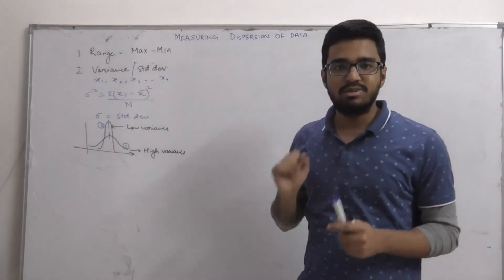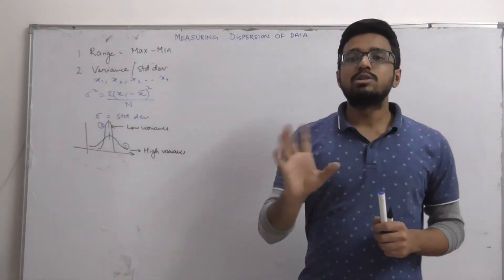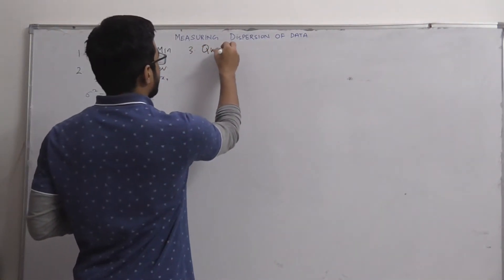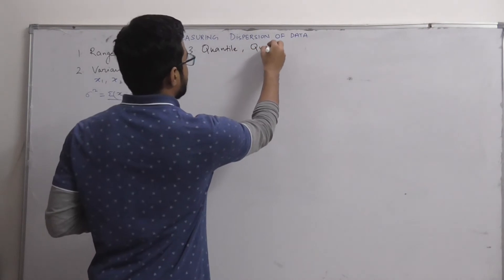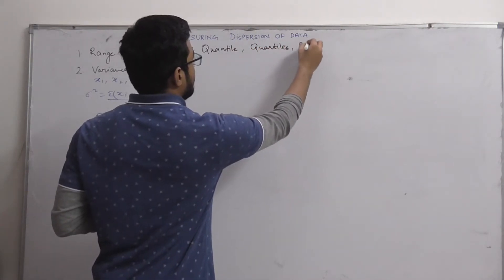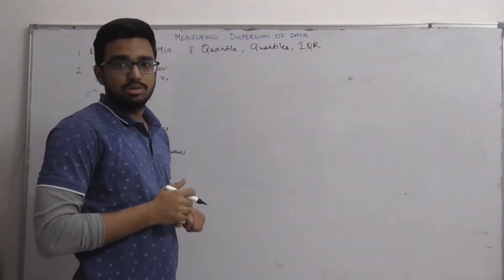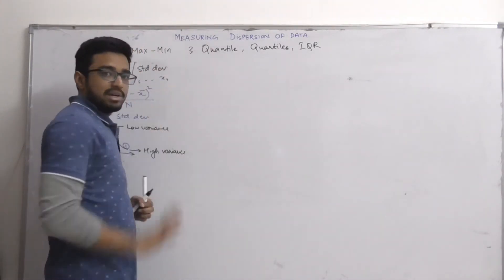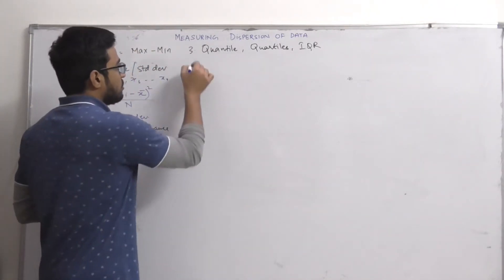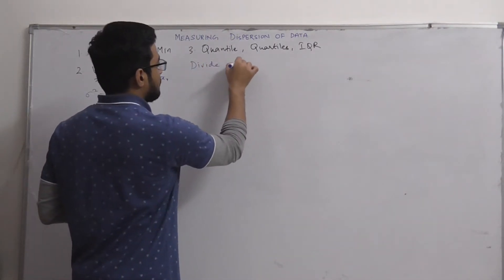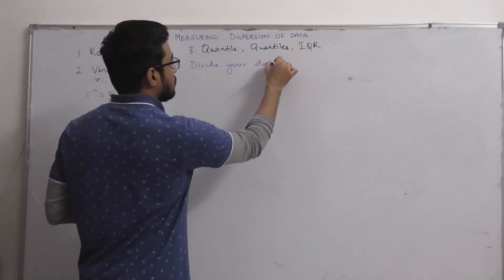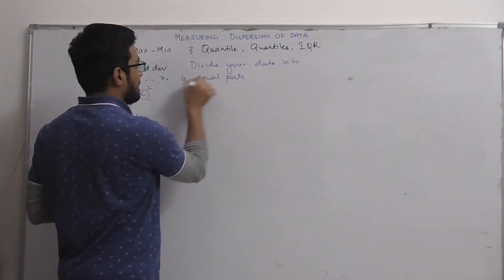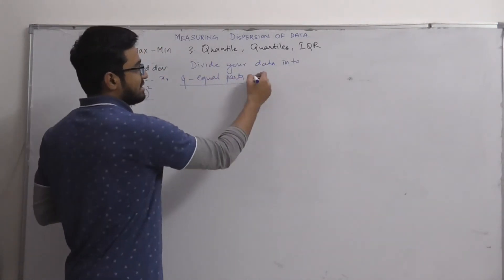Now the most important metric comes — quantiles, quartiles and interquartile range. We will see all three and understand the difference between them. Let us first start with quantile. If you divide your data into q equal parts, that is equivalent to having q quantiles.